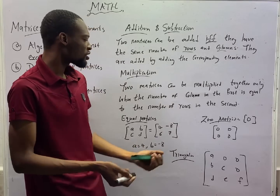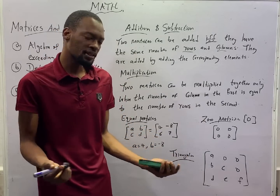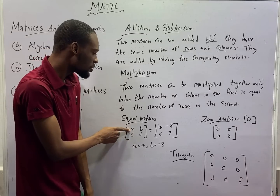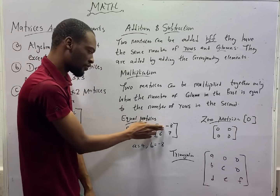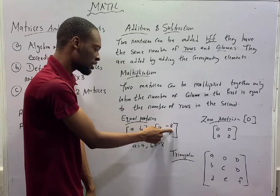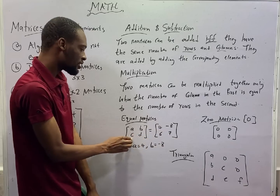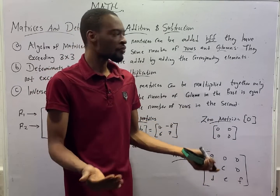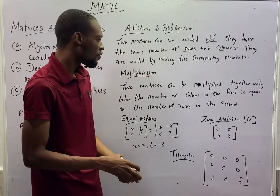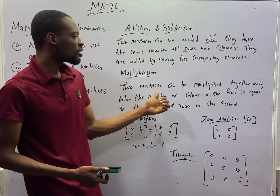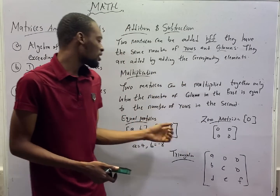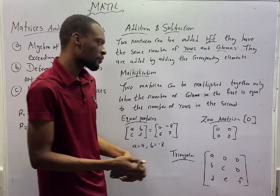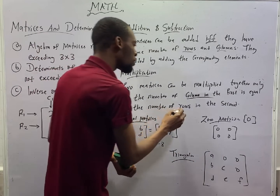To add or subtract matrices, you add the corresponding elements. If you have matrix [A, B; C, D] and matrix [4, -8; 6, 7], A is in the same position as 4, so A plus 4; B plus -8; C plus 6; D plus 7. You add elements standing in similar positions. The members of matrices are referred to as elements. For multiplication, two matrices can be multiplied only when the number of columns in the first equals the number of rows in the second.